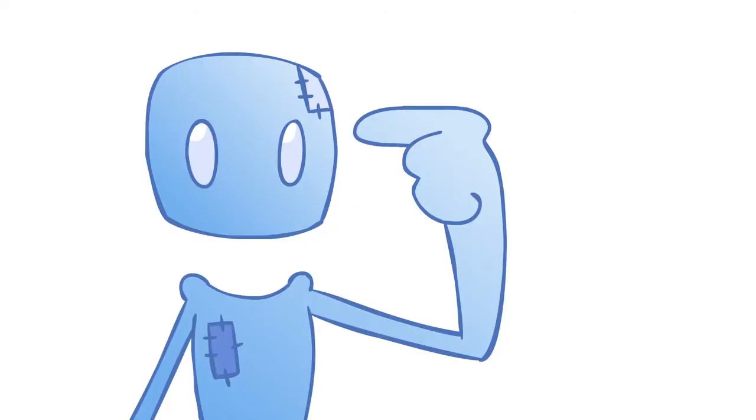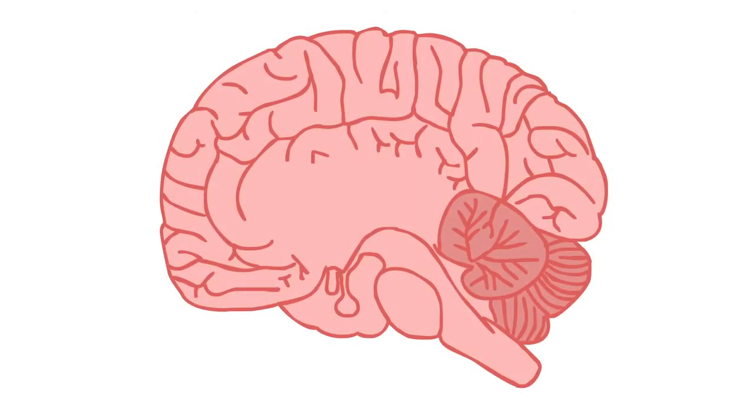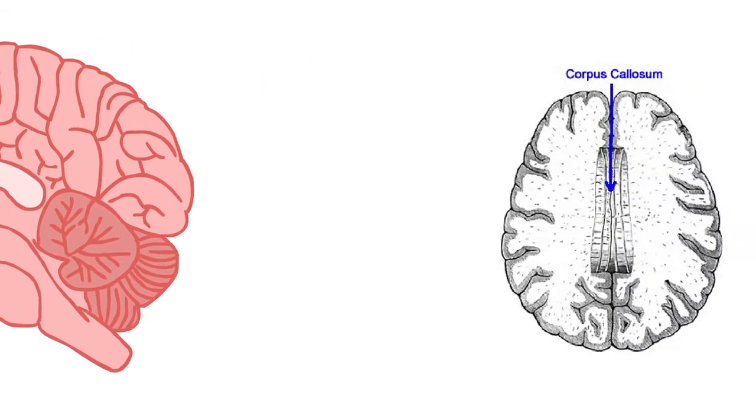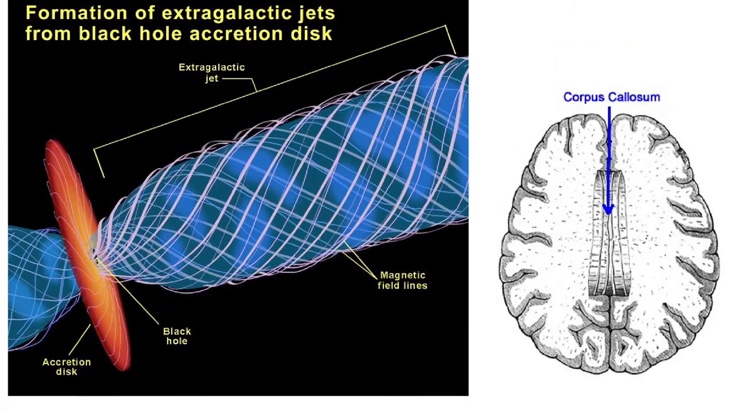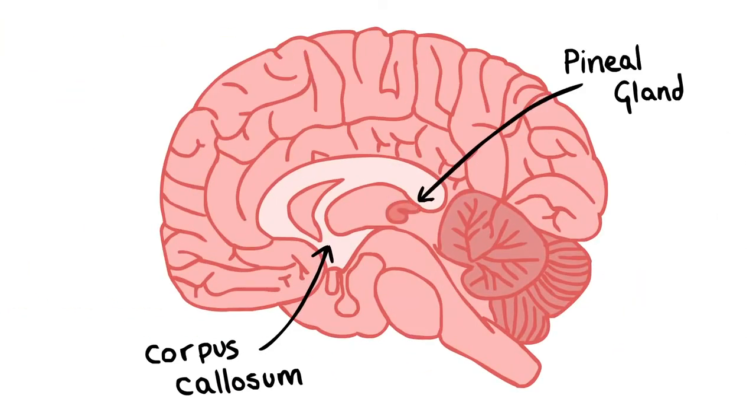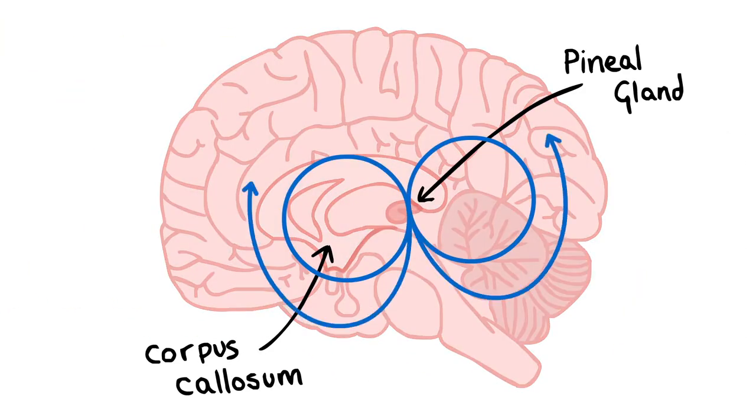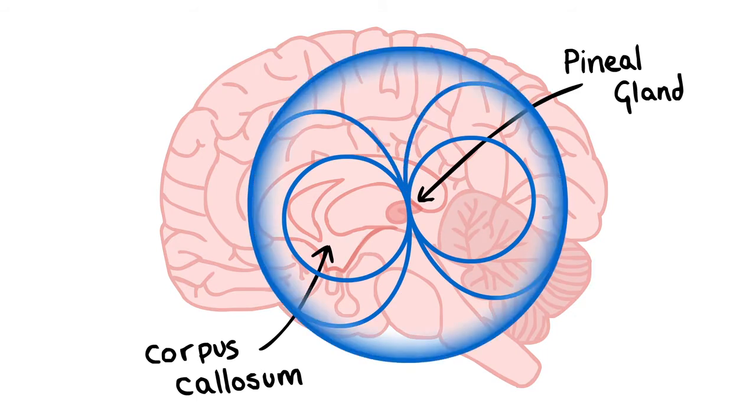You have the entire field, which is a network of interconnected data. Then you have the corpus callosum, which acts like an accretion disk of a galaxy, and then the pineal gland right in the center, which is the connector and the singularity for the entire network and field that is your brain.